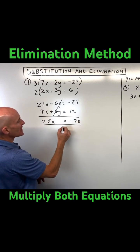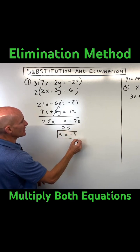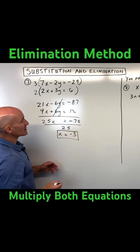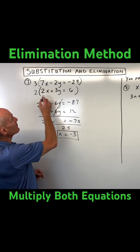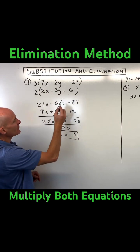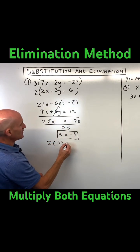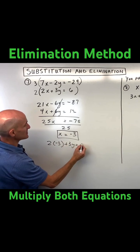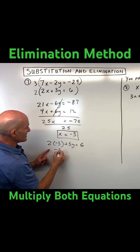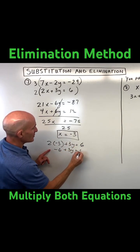And if we divide both sides by 25, x is equal to negative 3. Now we can take the negative 3 and plug it back into any one of the equations. I'm going to plug it into this bottom equation: 2 times negative 3 plus 3y is equal to 6, so that's negative 6 plus 3y equals 6.